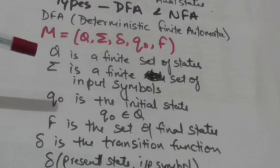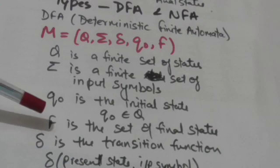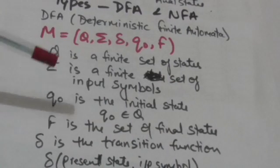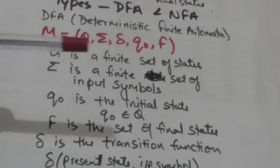F is the set of final states of DFA M. A finite automata must have at least one final state.